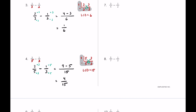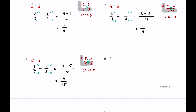For number seven we have three-fourths taking away one-half. Four and two have two in common: two times two is four and two times one is two. Multiplying the outside numbers: two times two is four, four times one is four — so the LCD is four. Three-fourths stays the same, and one-half multiplies by two over two: three times one is three, one times two is two, so three minus two equals one-fourth.